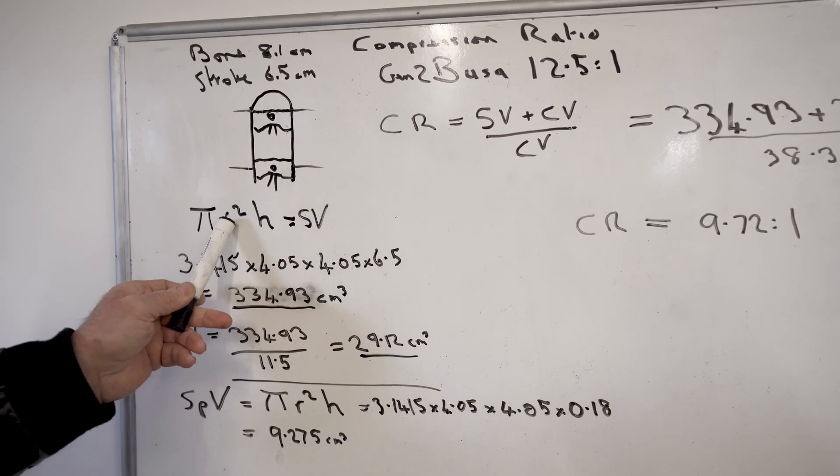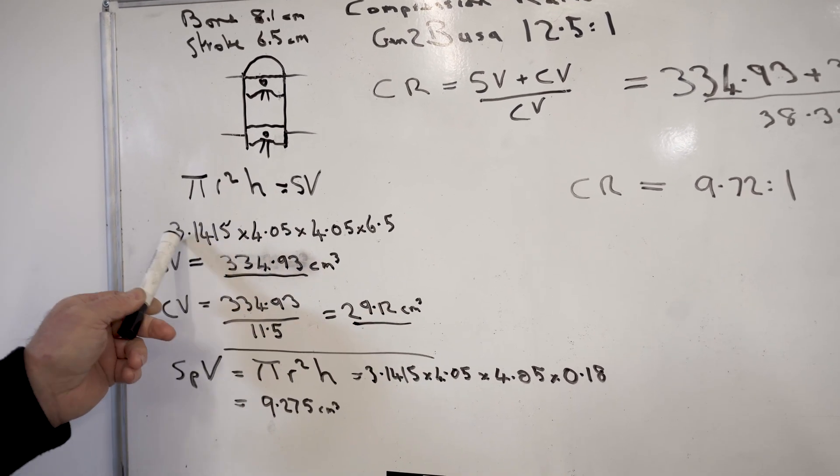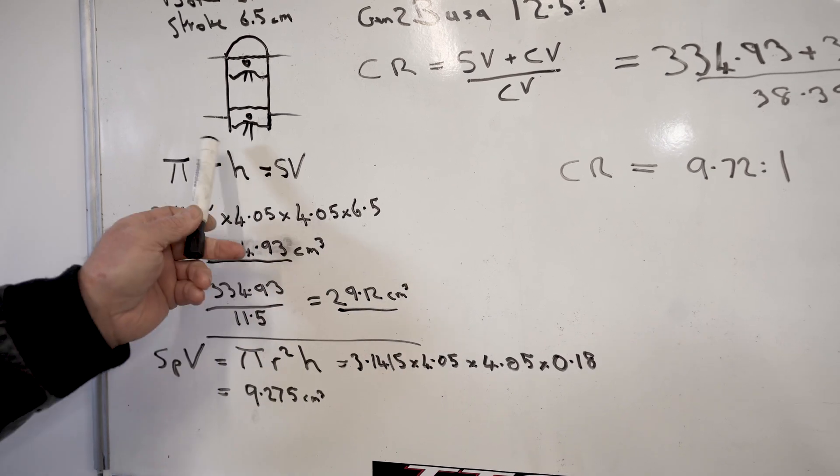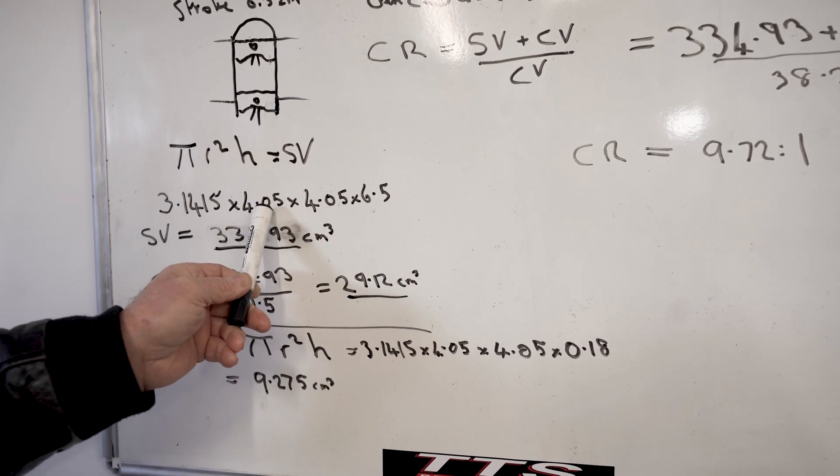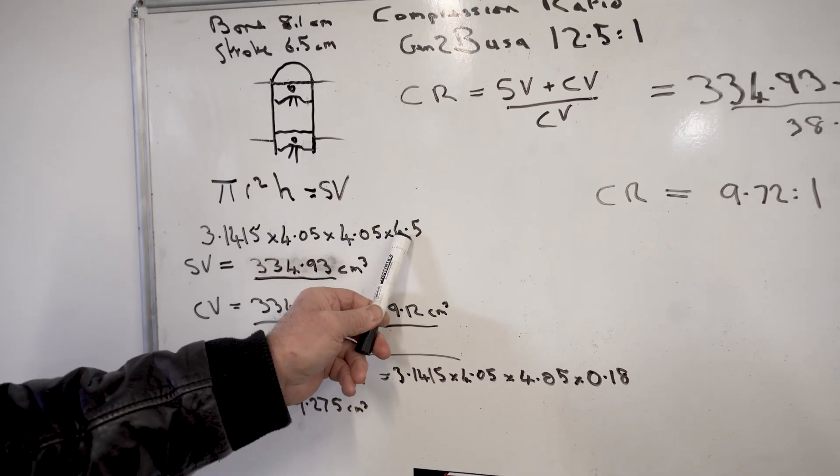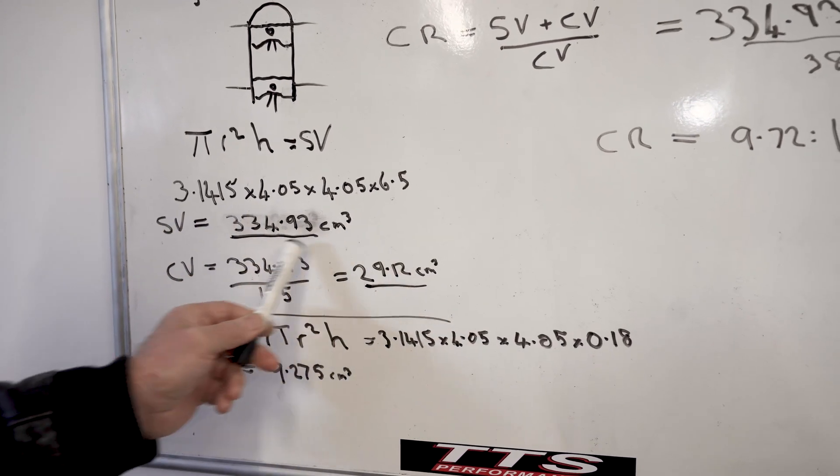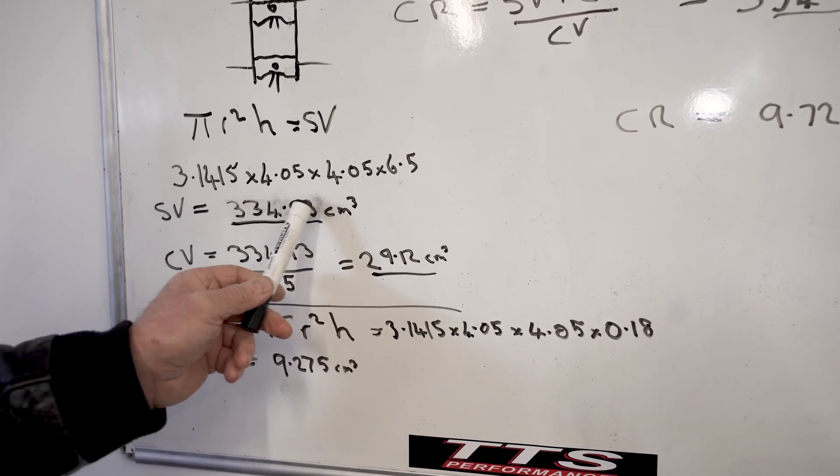So the radius of the bore is 4.05. Pi is a constant, that's 3.1415. Radius squared, so it's 4.05 centimeters times 4.05 centimeters times the stroke which is 6.5. So one cylinder has a swept volume of 334.93 centimeters cubed or cc's.